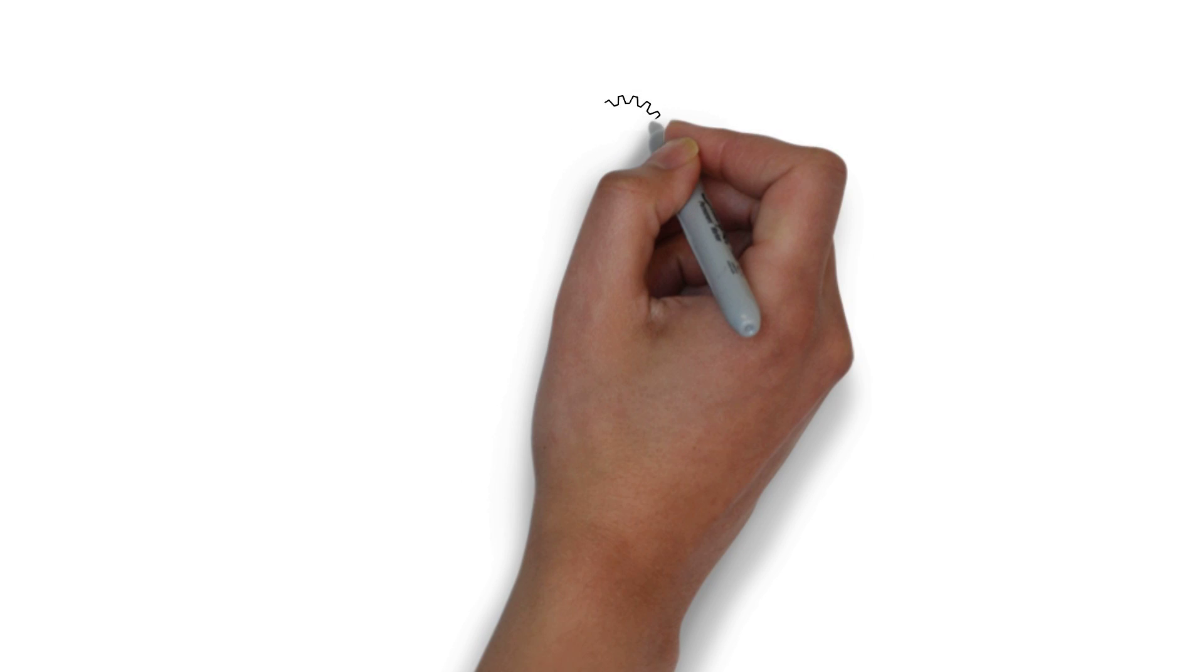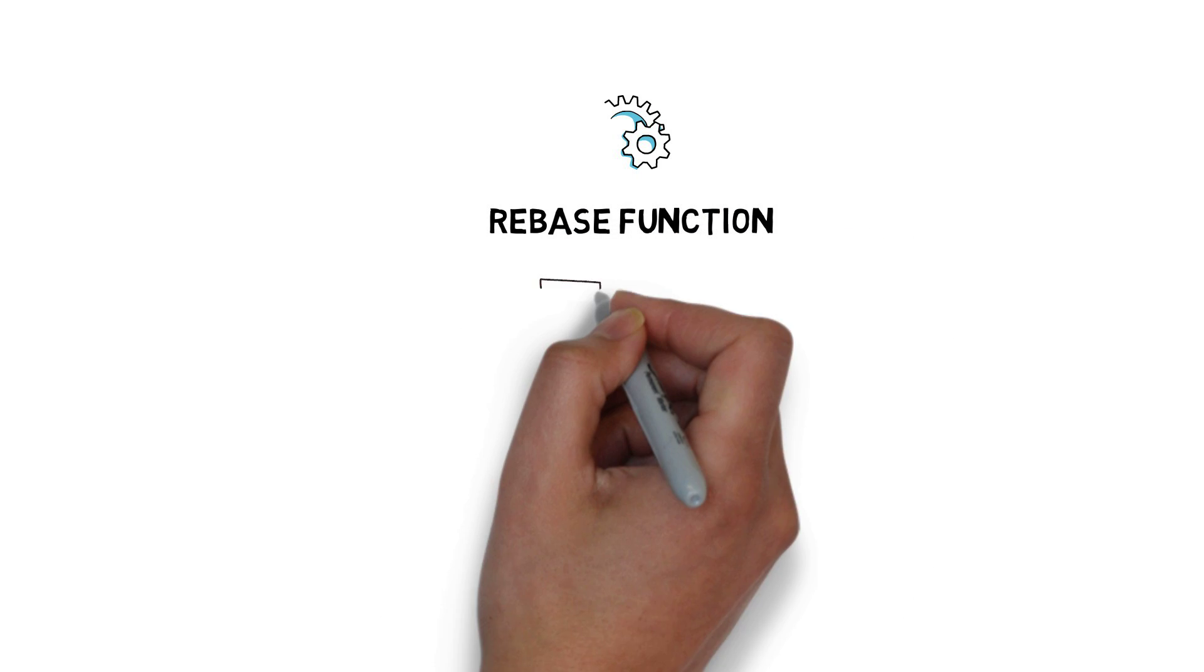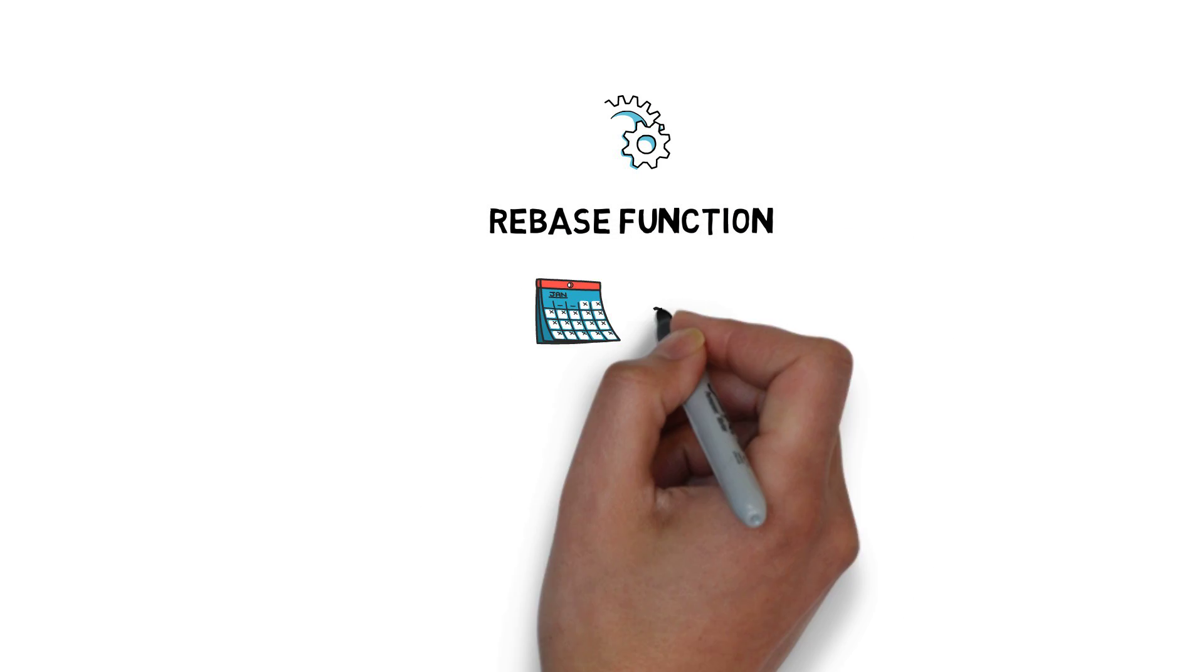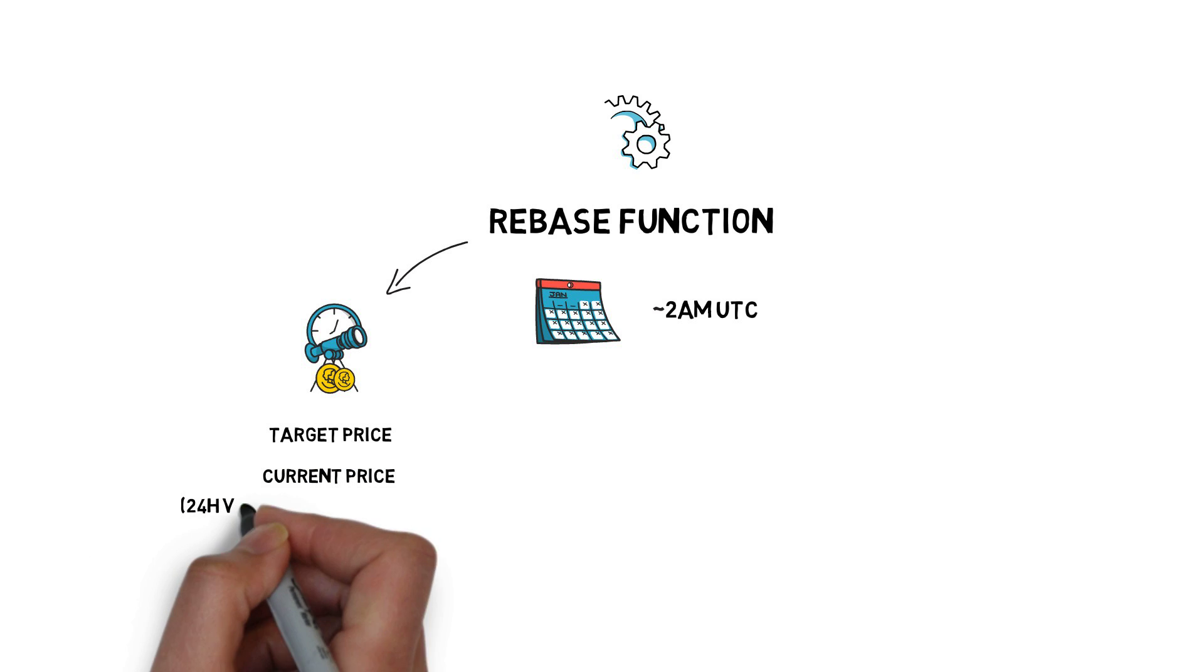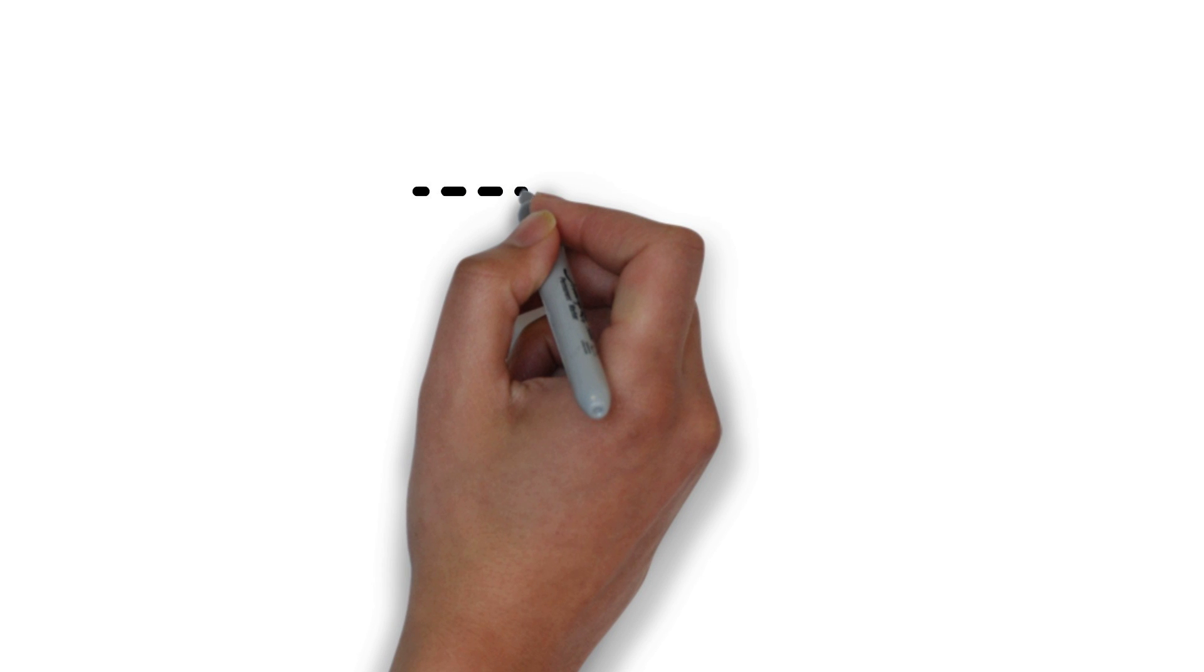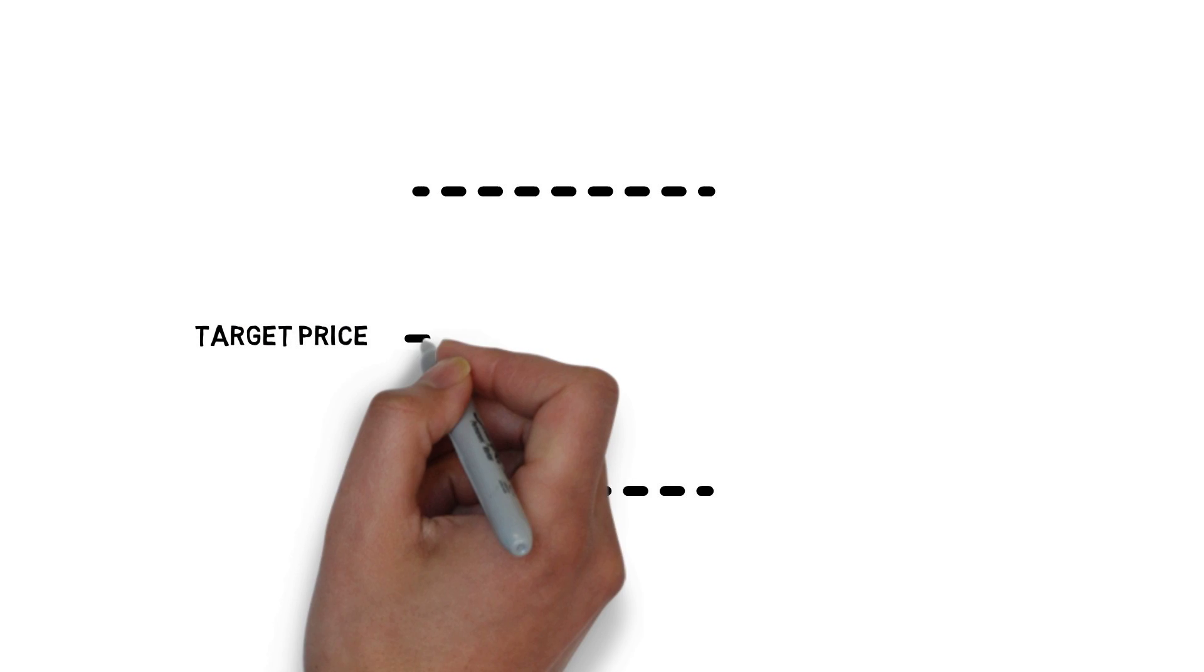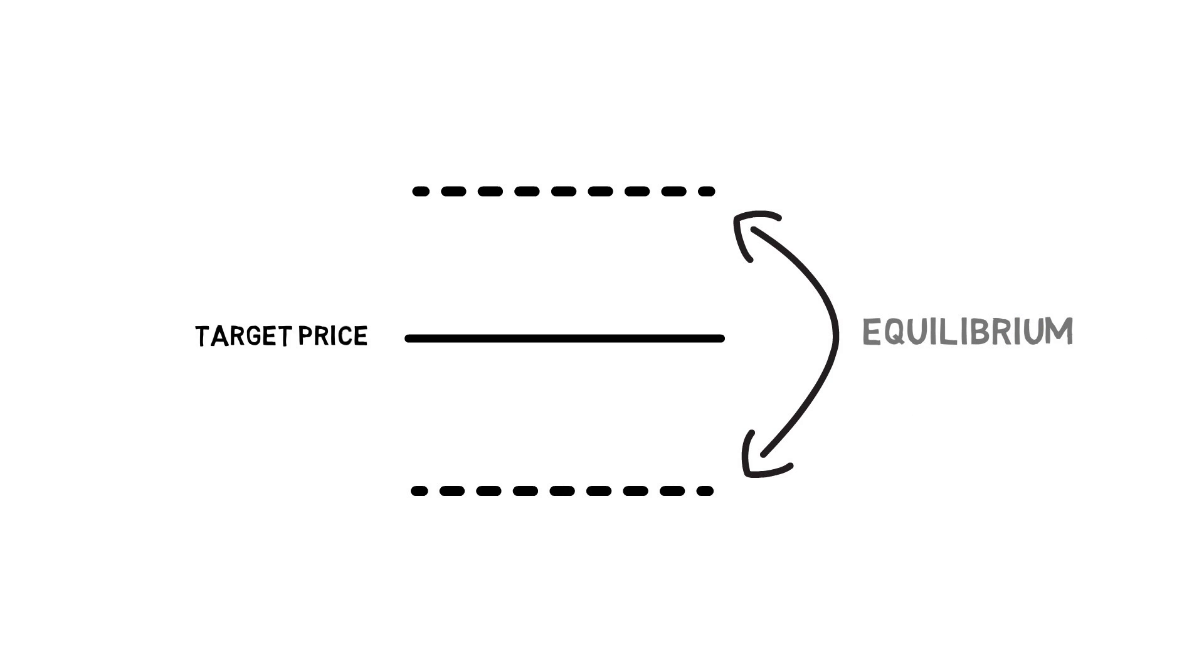Expansion and contraction are achieved automatically by a rebase function in the protocol. Every day at approximately 2 am UTC time, the rebase function can be called. The function makes use of price oracles to get the target price and the current price of Ample, or to be precise, a 24-hour volume weighted average price. If the current price of Ample is within 5% of the target price, the algorithm classifies the state as equilibrium and doesn't change the supply of Ample.